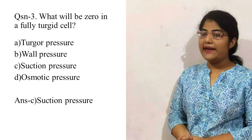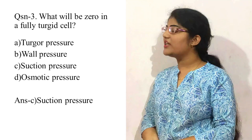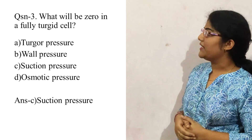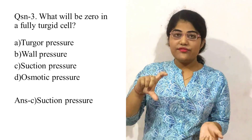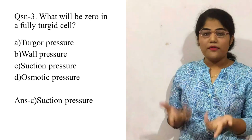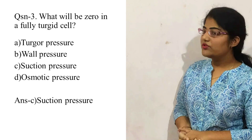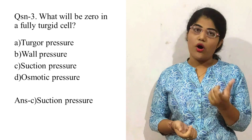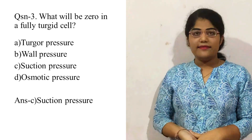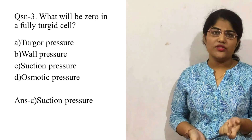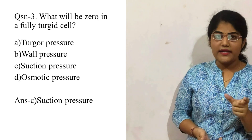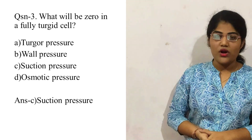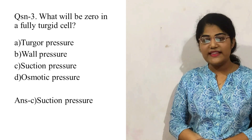Question number three: in a fully turgid cell, mark the point — the options are option A is turgor pressure, option B is wall pressure, option C is suction pressure, and option D is osmotic pressure. Option A is wrong. Wall pressure is always equal and opposite to turgor pressure, so option B is also wrong. Suction pressure SP equals OP minus TP, so in a fully turgid cell the suction pressure is zero. The correct option is option C, that is suction pressure.